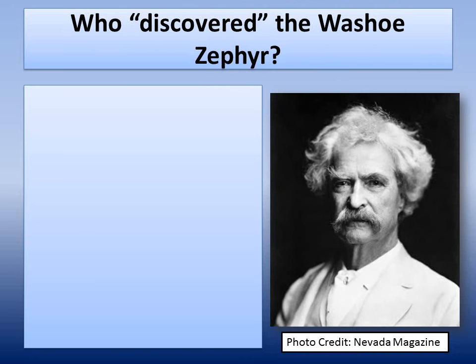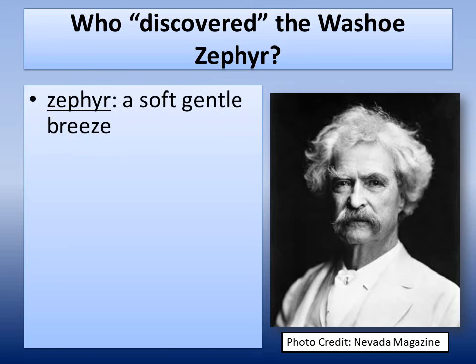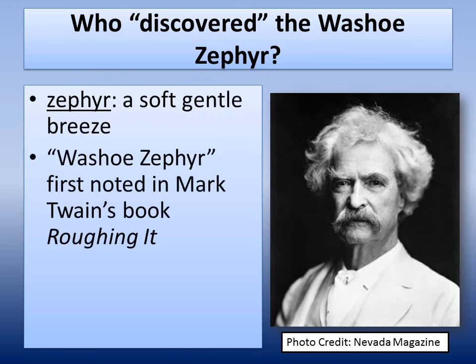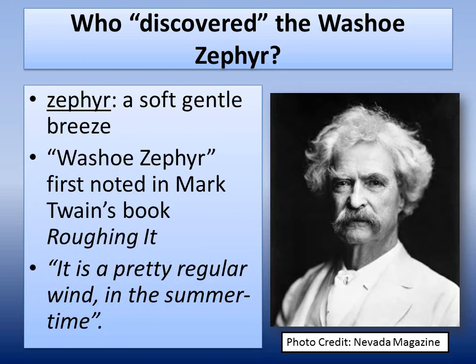While the true definition of a zephyr is a soft and gentle breeze, the term Washoe Zephyr was first coined by Mark Twain in his book Roughing It. Known for his satire, he ironically describes the Washoe Zephyr as a peculiarly scriptural wind in that no man knoweth whence it cometh, and it is a pretty regular wind in the summertime.